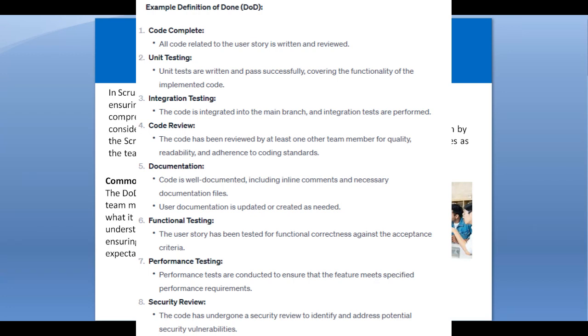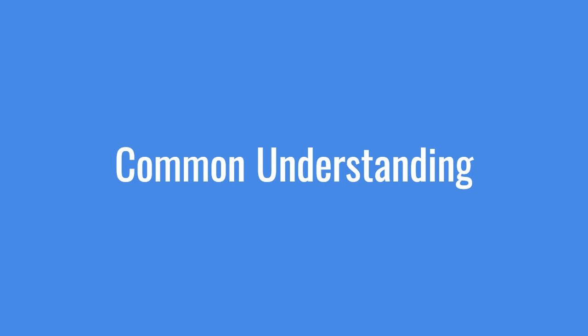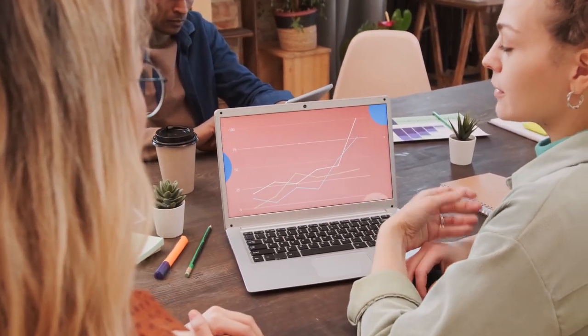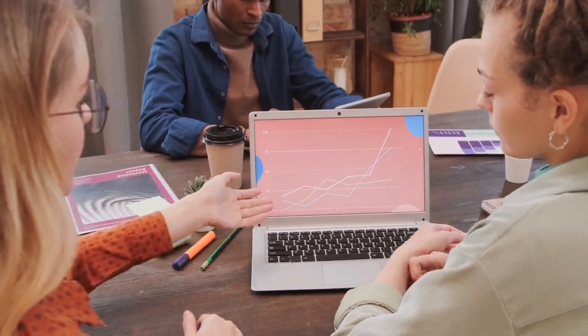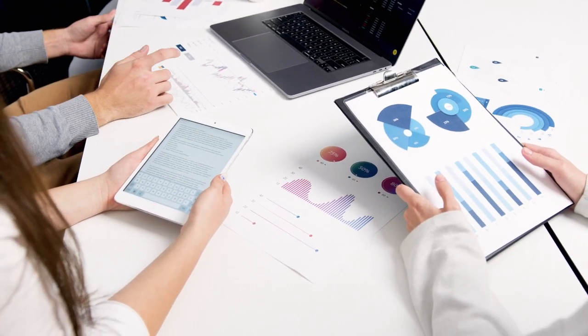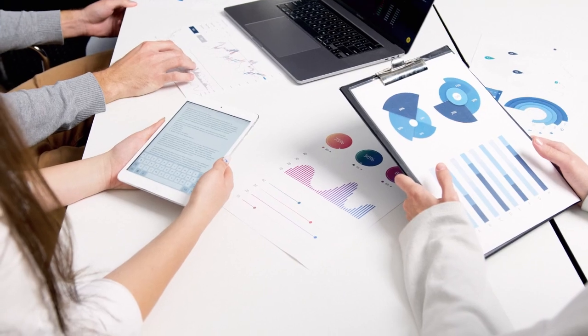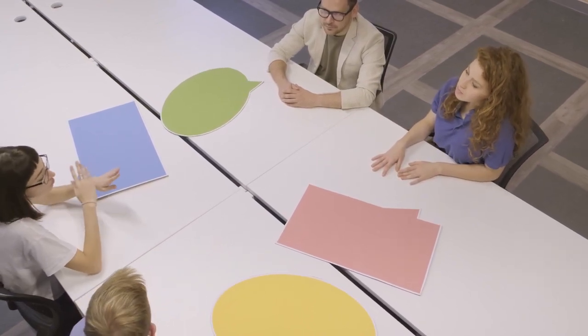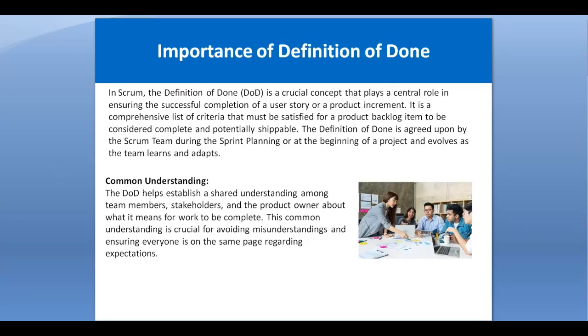The first benefit is common understanding. Definition of Done helps establish a shared understanding among team members, stakeholders, and the product owner about what it means for work to be completed. Whenever we are working on a sprint, we must know what criteria we need to meet for the customer to accept our product or feature. This common understanding is crucial for avoiding misunderstandings and ensuring everyone — the Scrum development team, product owner, and all stakeholders — is on the same page regarding expectations.